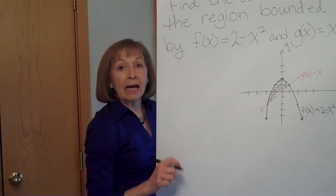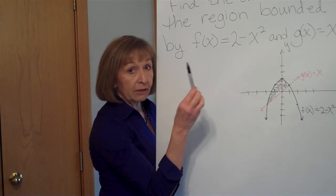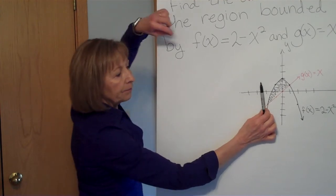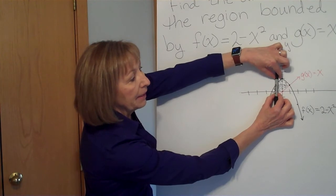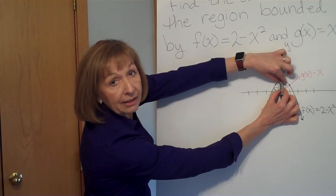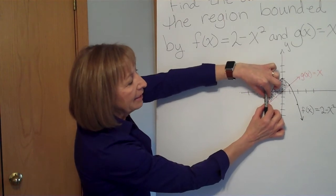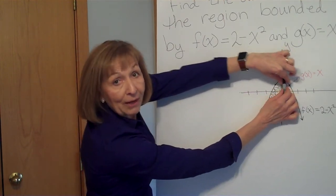Now to do this, we want to think about how our sub rectangles would go. If I hold my sub rectangles vertically and I span from left to right, there's consistency of the f of x curve being on the top of the region and the g of x curve being on the bottom. So I have consistency of one function always being on the top and the other one on the bottom throughout that interval.